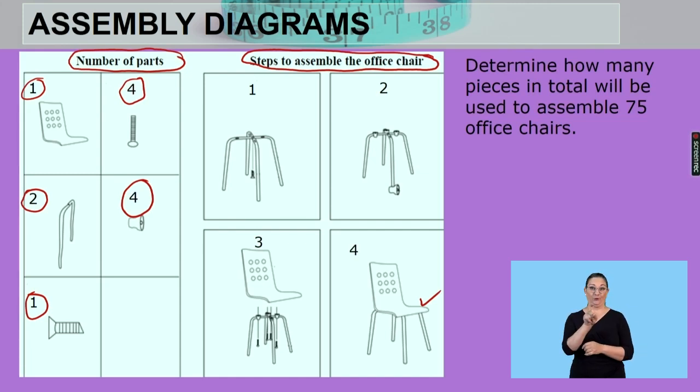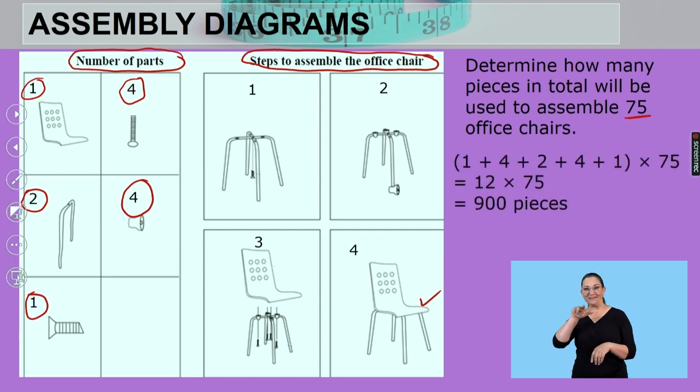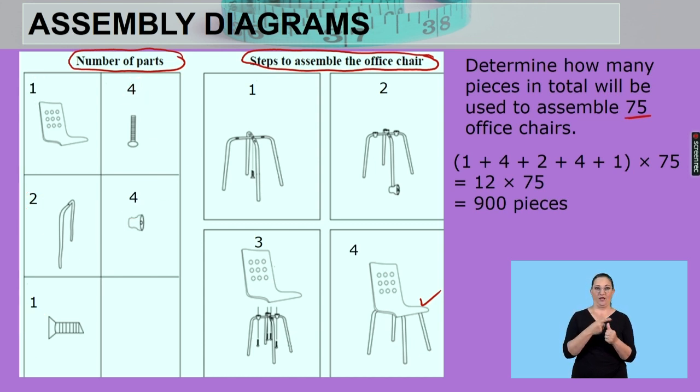So let's read the question. Determine how many pieces in total will be used to assemble 75 office chairs. So let's see what I've done. Let's get rid of those so we can recount them.